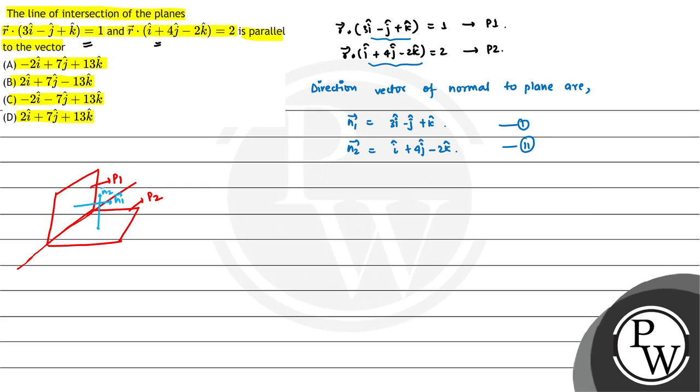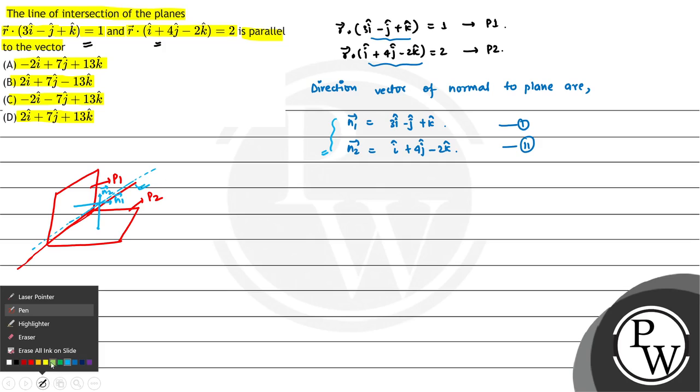vector n1 and vector n2 cross product, that will be our line of intersection parallel. We can see that the normal direction vector cross product is the vector that will be parallel to the intersection of planes.